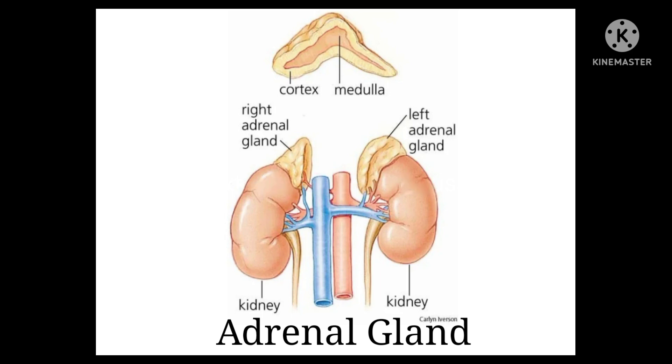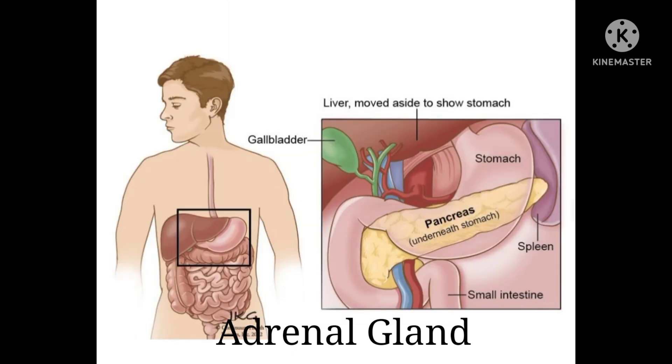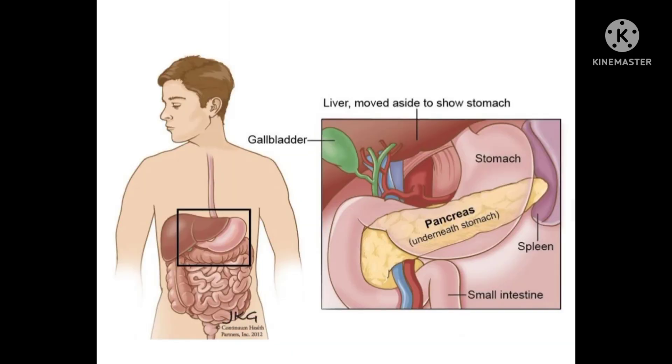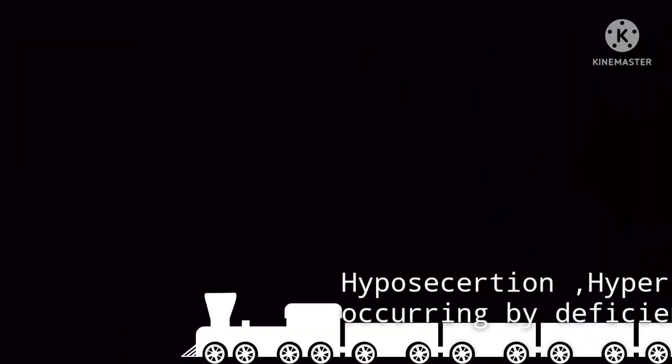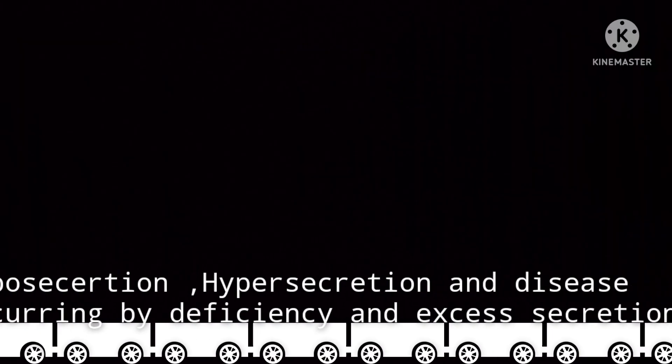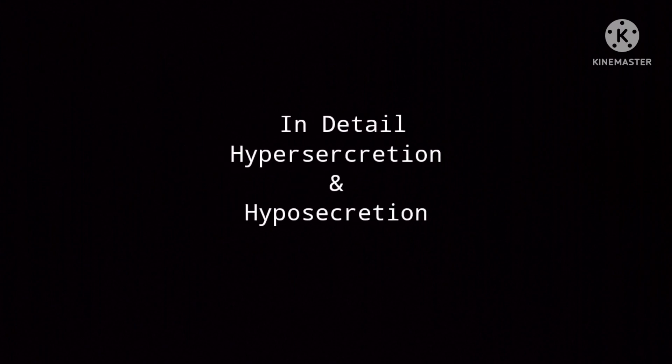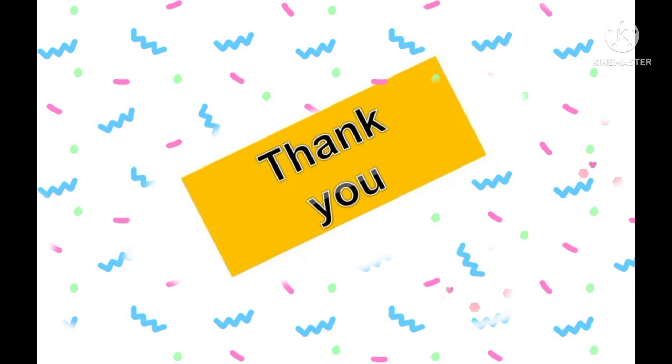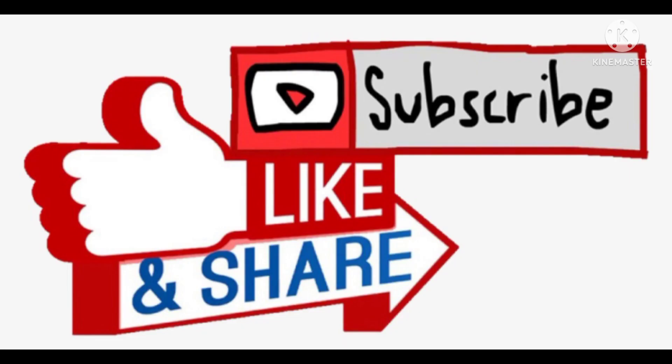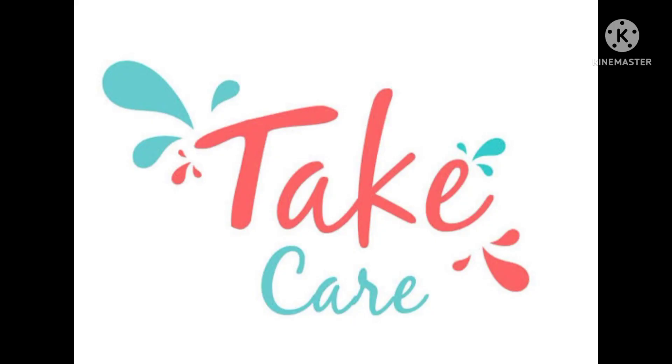This was the introduction to the whole chapter. In the next video, we are going to discuss two glands — the adrenal gland and the pancreas gland — in detail, including the excess and deficiency of the hormones secreted by these glands. Thank you, please like and subscribe to my channel, and have a nice day ahead.